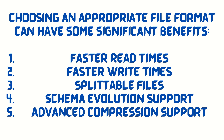Next is schema evolution support, meaning the file format should allow us to change the schema of a file — we can easily add or delete columns. Last is advanced compression support. The file format should support advanced compression through various compression codecs like Snappy, bzip2, LZO, etc. These are the key benefits to look for in any file format.